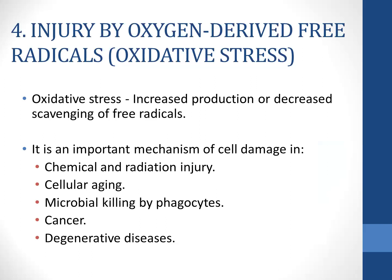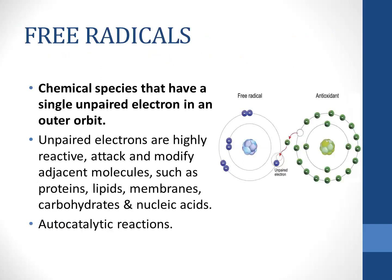Oxidative stress, or injury by oxygen-derived free radicals, is another mechanism by which a cell is injured. It is an important mechanism in chemical and radiation injury, cellular aging, cancer, and degenerative diseases, and it is also the method phagocytes use to kill microbes. Free radicals are chemical species that have an unpaired electron in the outer orbit. This electron is highly reactive and can attack and modify adjacent molecules like proteins, lipids, and membranes, starting autocatalytic reactions that continue themselves once initiated.